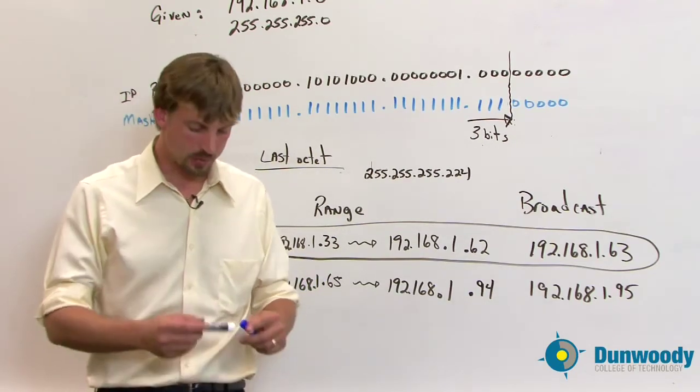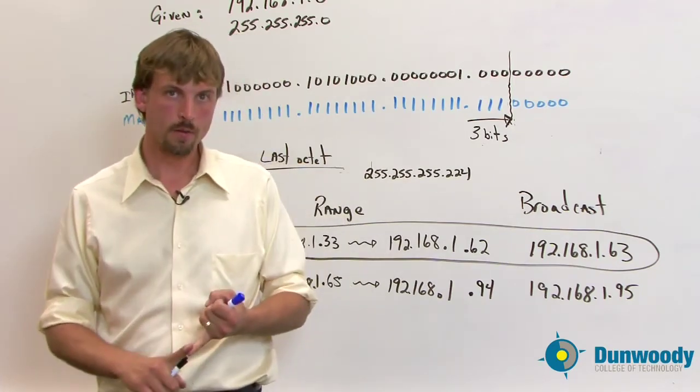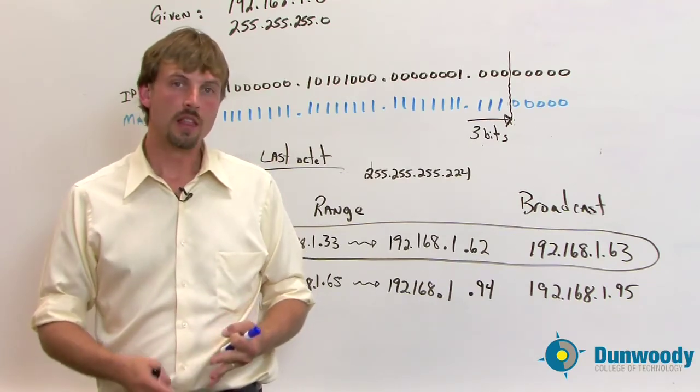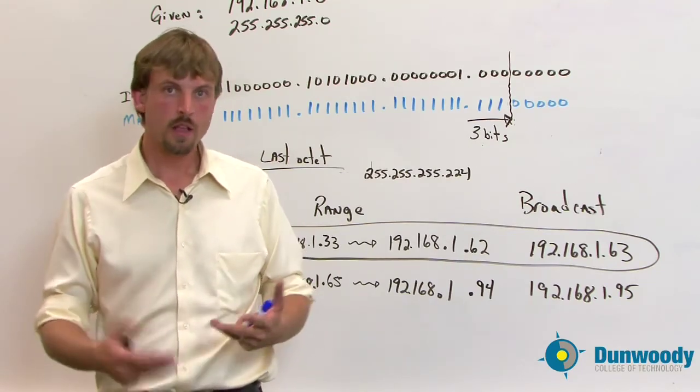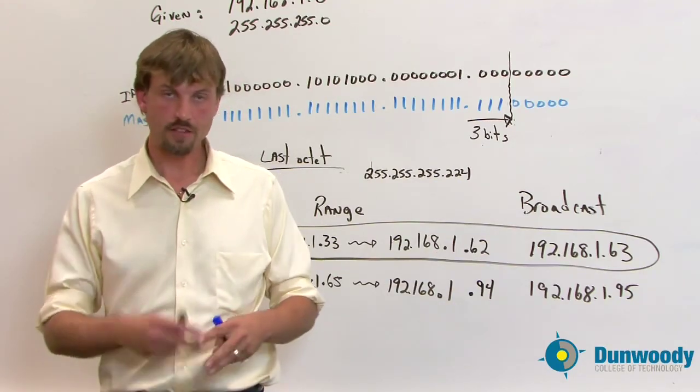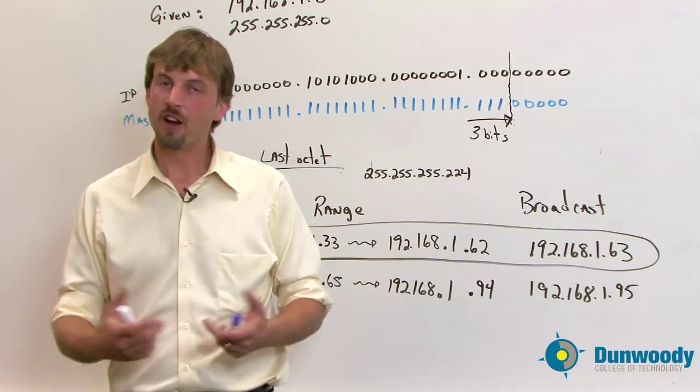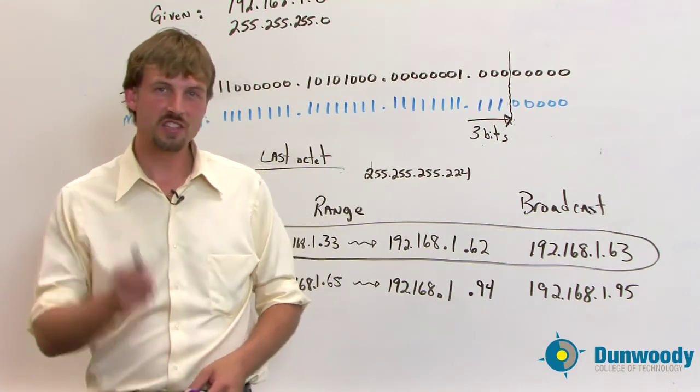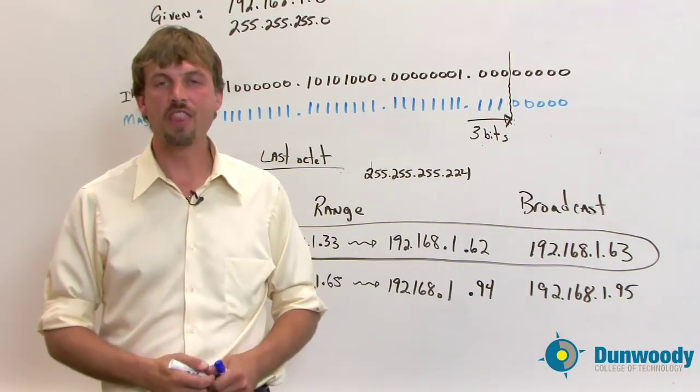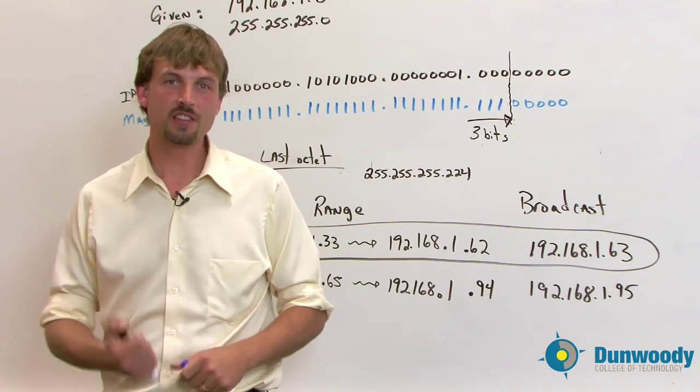And also keep in mind in this process that we've divided a class C network. You can also divide class B's and you can also divide class A's. The math in those gets a little bit longer in terms of what the binary looks like, but the process is no different. You just have to know where those dividing lines are. So keep that in mind. If you're up for a challenge, go take a look at a class B address, see if you can divide it into, oh, let's say roughly a thousand networks and see if you can work that one out. Those are a lot of fun. Thanks for watchin'.